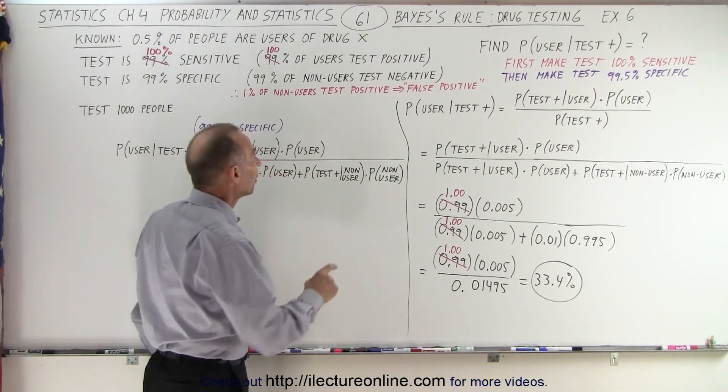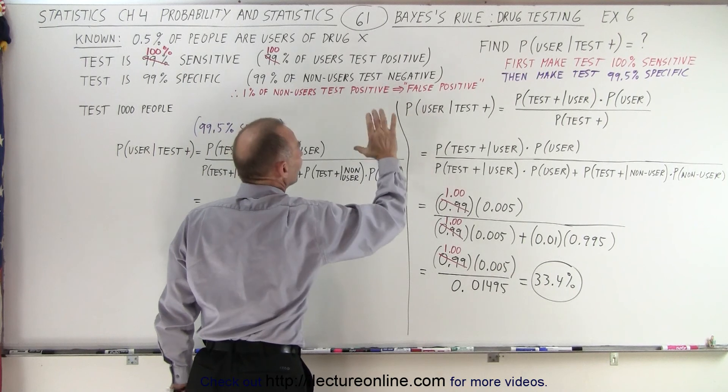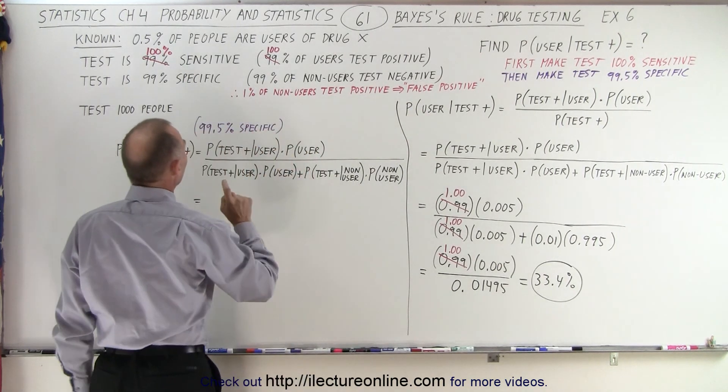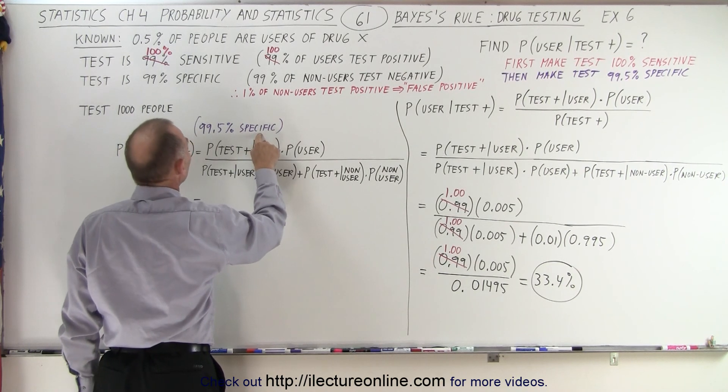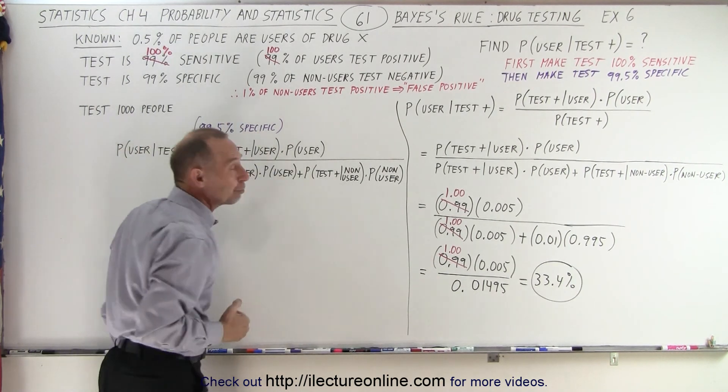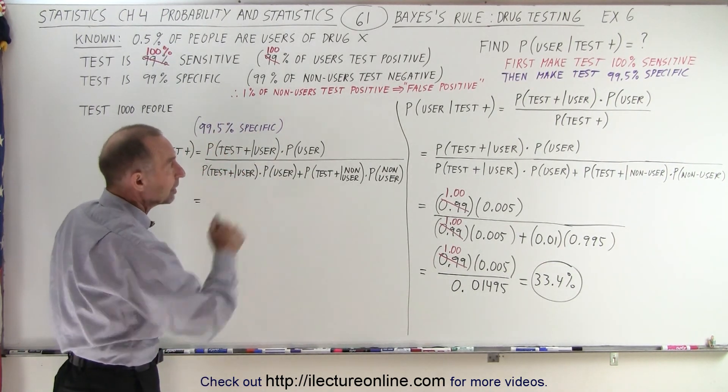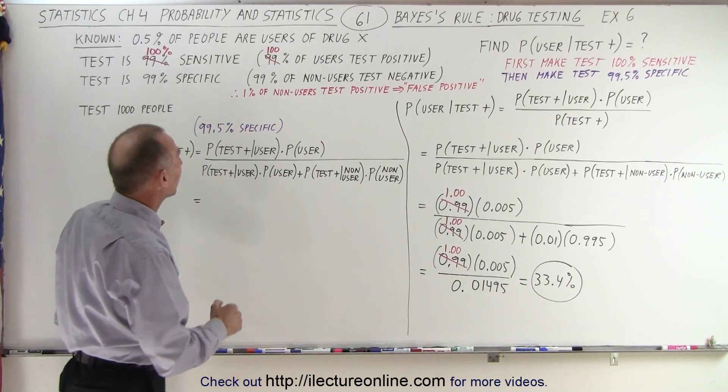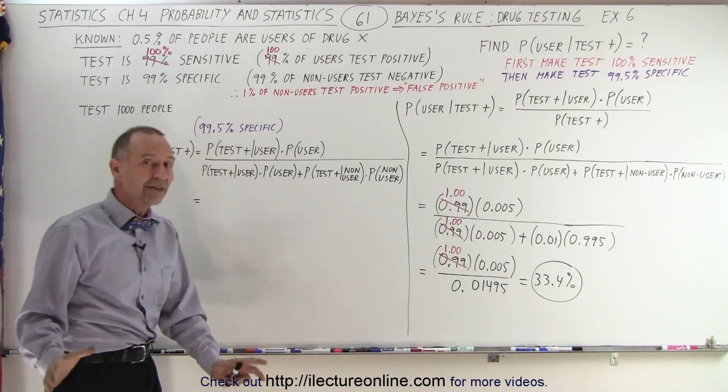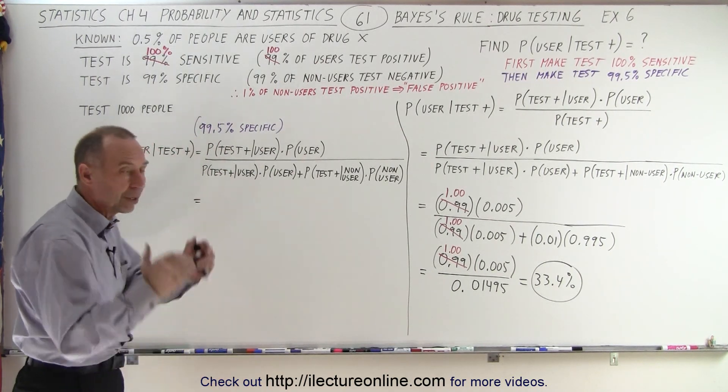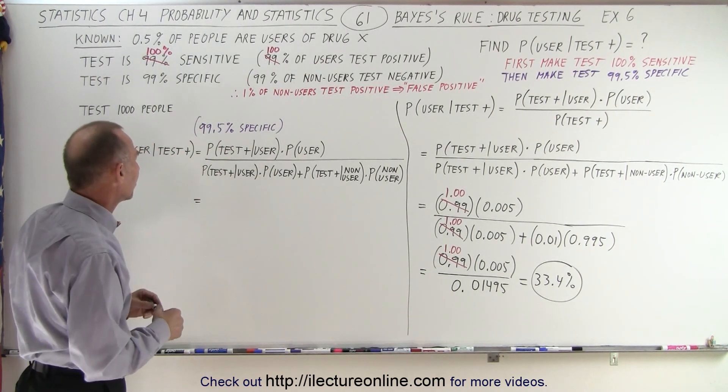It's all about the false positives. That has to be reduced. So what happens if we increase the specificity of the test from 99% to 99.5%? Sure we'll keep the probability at 100%. Let's keep this at 100% so that it catches every user for sure, but we want to reduce the false positives to see what happens.